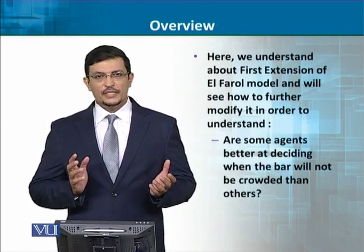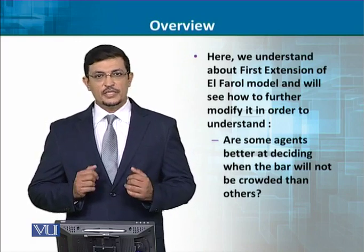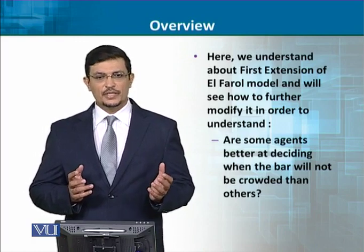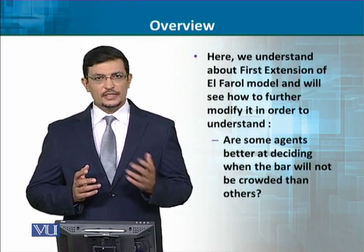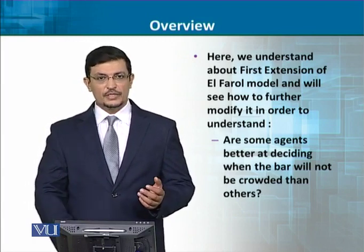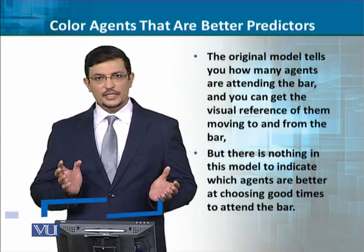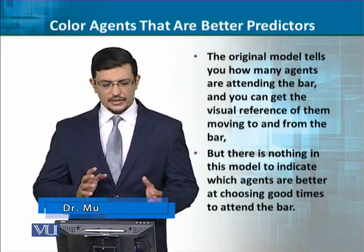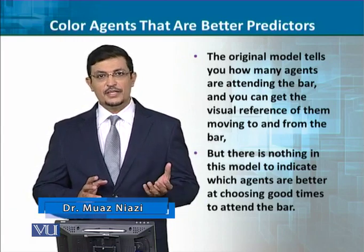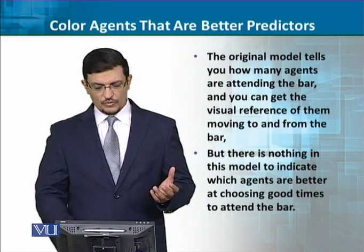We've seen the El Farol model in which the first weakness is that agents look like this — the strategy is different from agent to agent. The question is: are there some agents that can be better predictors than others? In our inner model, we've been told how many agents there are and how many of them are visually down. But we haven't been told how many agents can be better. If we're trying to define these types of agents, we want to see whether it's possible or not.